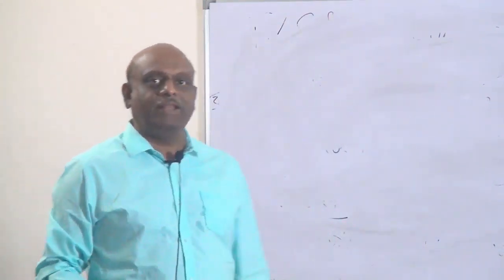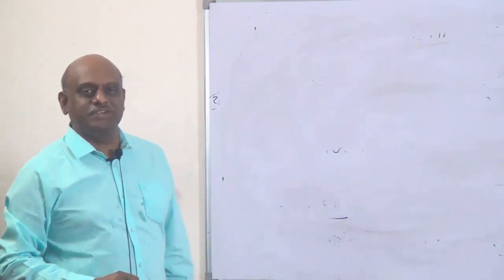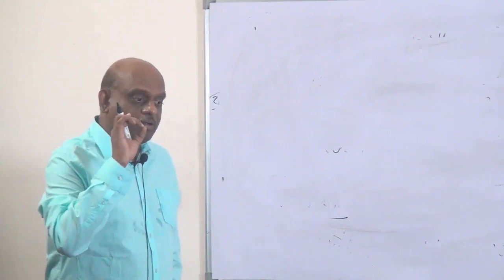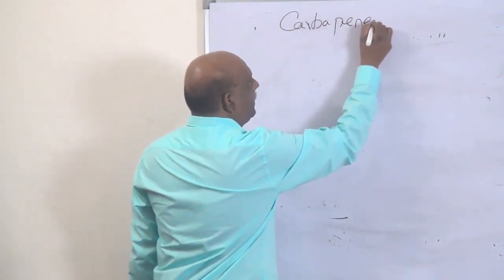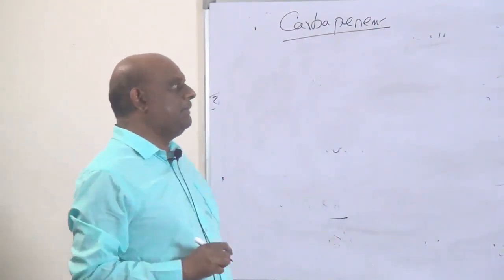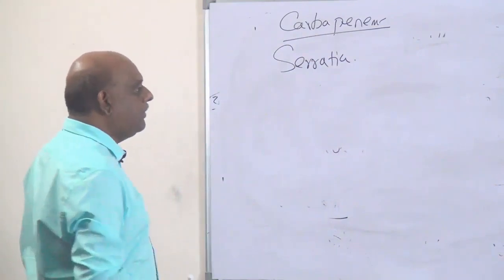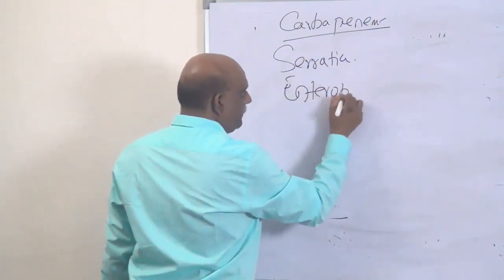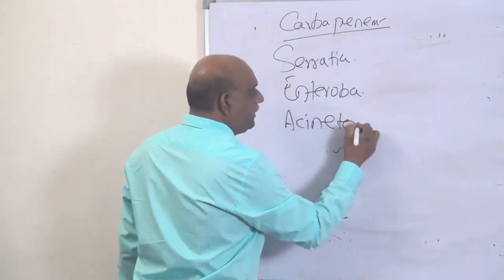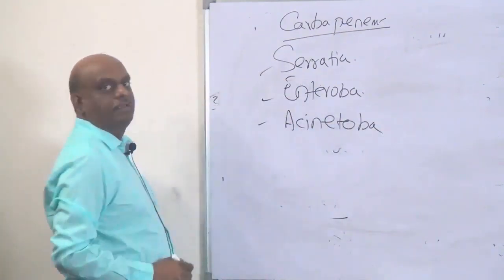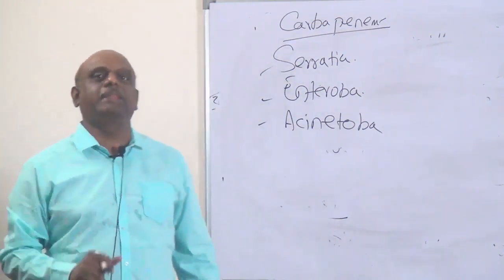The next favorite drug of the examiner is carbapenems. There are specific indications where carbapenems — imipenem-cilastatin — are the drug of choice. Where do you use carbapenems? Serratia marcescens, then enterobacter, and acinetobacter — very selectively, carbapenems are considered the drug of choice.